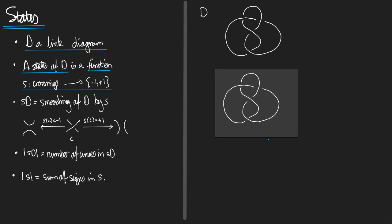In other words, a state is really nothing other than a recipe for writing a sign at every crossing. For example, a state might assign: plus one, minus one, plus one, minus one, plus one, minus one. That's a state. How many states are there altogether? In this diagram of the figure eight knot there are four crossings, so each crossing can have two signs, giving two to the four, which is 16 possible states.